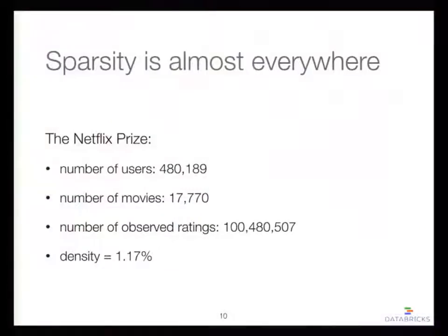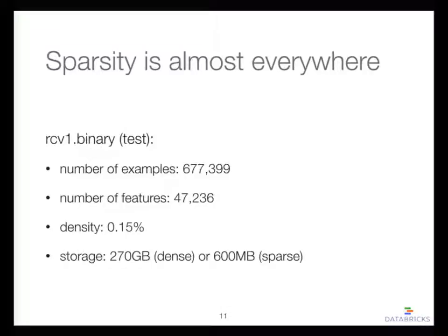Let me show some real-world datasets. The Netflix Prize has close to half a million users and 20,000 movies, but only 100 million observed ratings — density just over 1%. There's also the standard training dataset RCV-1, with more than half a million examples and about 50,000 features — density less than 1%. In that case you really need to think seriously about sparsity, because in dense format the dataset would be 270 gigabytes, but in sparse format it's just 600 megabytes.